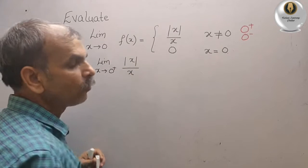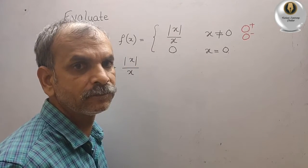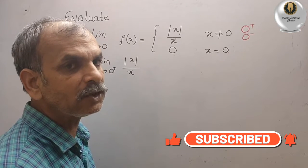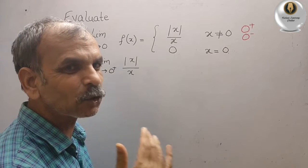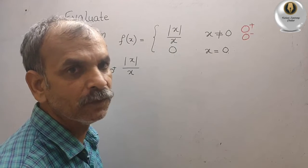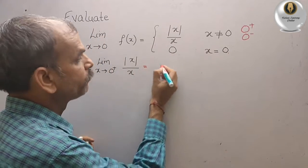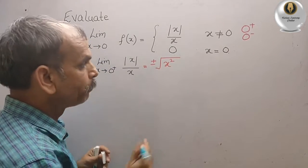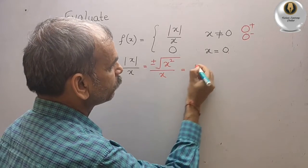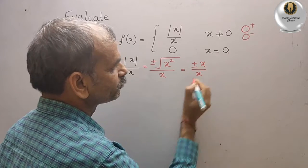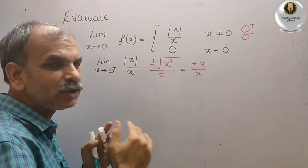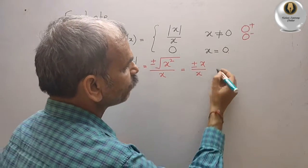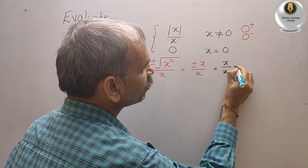Now, modulus of x gives us plus or minus root under x squared, which is equal to plus or minus x. Since we are taking 0 plus, x is positive, so we take plus x. Therefore, x divided by x equals 1.